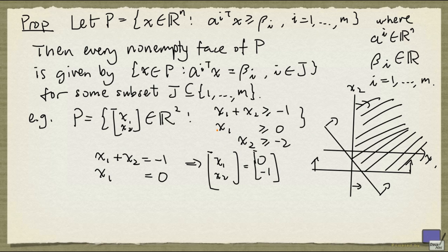Now what happens if we set the last two inequalities to equality? Well, we'll get X₁ equal to 0, and X₂ equal to minus 2. That again gives us a single point, but that does not satisfy the first inequality. And so that will not give us a face.